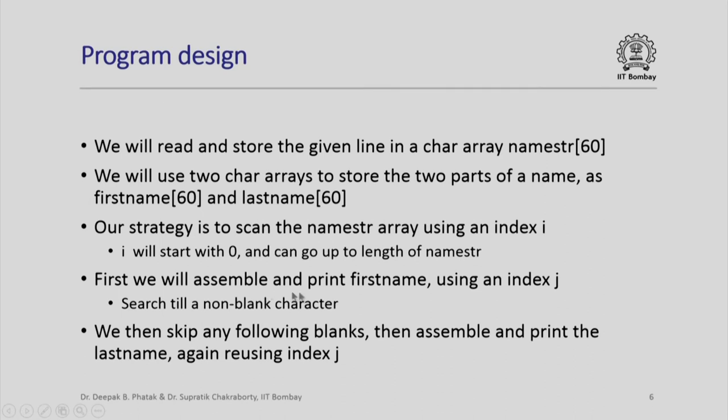For which we will use an index j. We will search for non-blank characters because the first name will contain a name which will have non-blank characters. If we keep searching for it, till the last non-blank character is read, once a blank character is seen the word has ended. After that we will skip any following blanks and then assemble and print the last name, again reusing the index j.